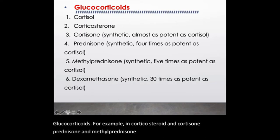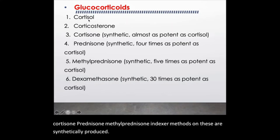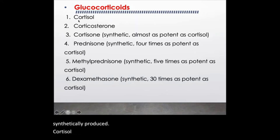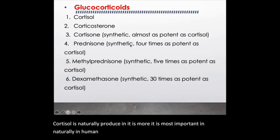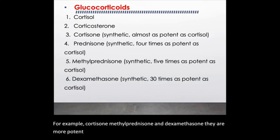Cortisone, prednisone, methylprednisolone, and dexamethasone are synthetically produced. Cortisol is naturally produced and is the most potent naturally in the human body. However, these synthetic glucocorticoids — cortisone, methylprednisolone, and dexamethasone — are more potent as compared to naturally produced cortisol.